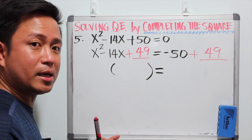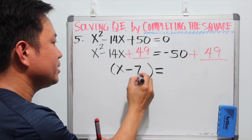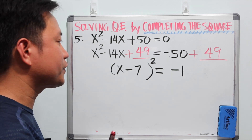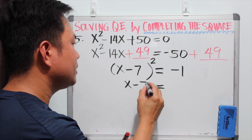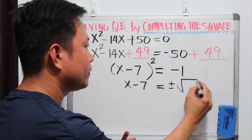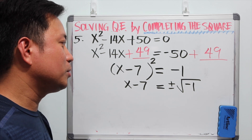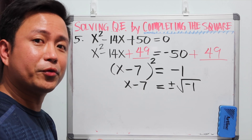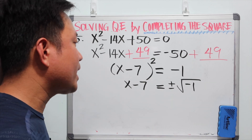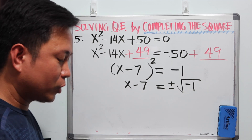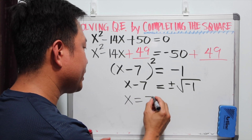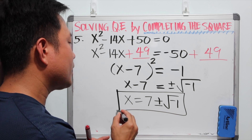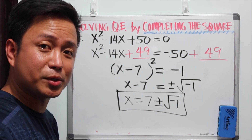The left side factors as x minus 7 to the second power. The right side is negative 50 plus 49, which is negative 1. When you get the square root of both sides, you have x minus 7 equal to plus or minus the square root of negative 1. Can you think of a number that when multiplied by itself gives a negative number? It's not possible — square roots of negative numbers are imaginary numbers. So the values of x can be written as 7 plus or minus root of negative 1, or 7 plus or minus i in algebra 2, which means there is no real solution.